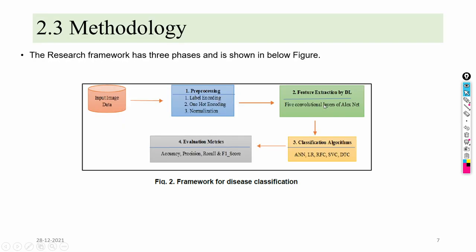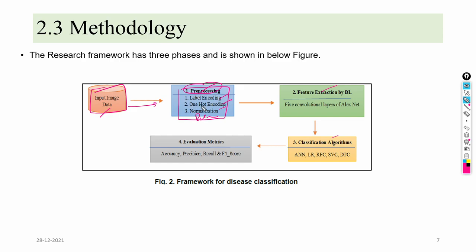The research framework has three important phases. The first phase is pre-processing, the second phase is feature extraction, and the third phase is the classification algorithm. In the first part, we take input image data and apply pre-processing, which includes label encoding, one-hot encoding, normalizing, and resizing — four operations performed in pre-processing.